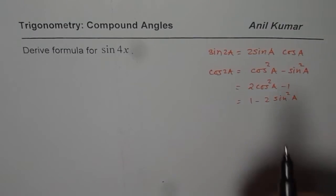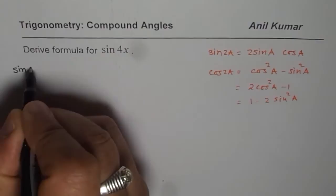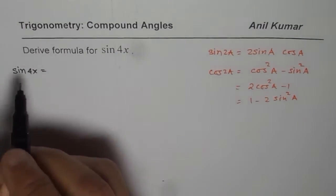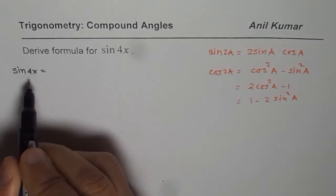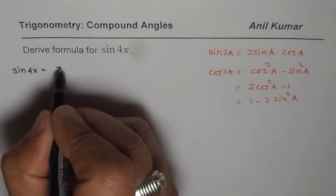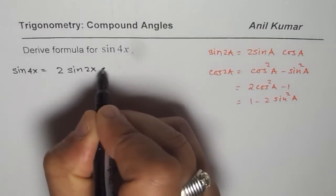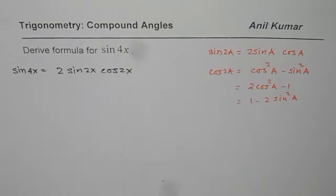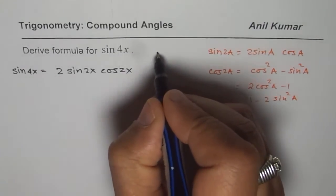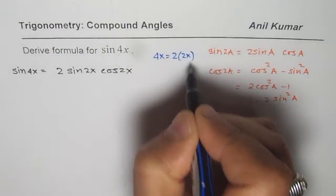Here is a solution for sin 4x. Let us begin with sin 4x. Think of 2a as 4x. We will apply this formula and write it as 2 sin 2x cos 2x. Why? Because we can write 4x equals 2 times 2x.